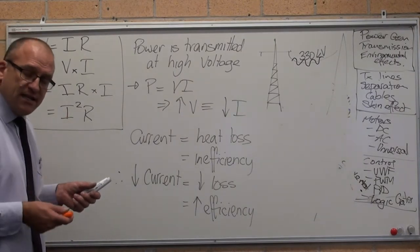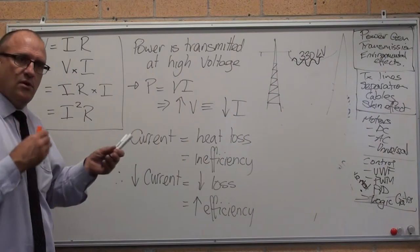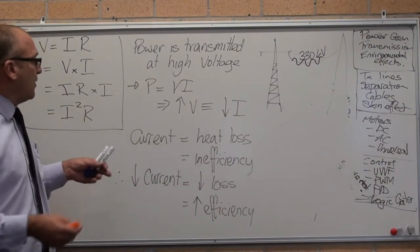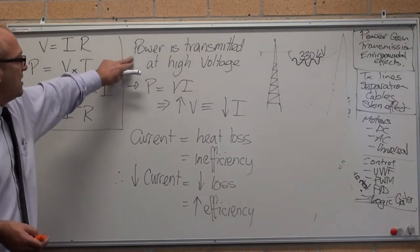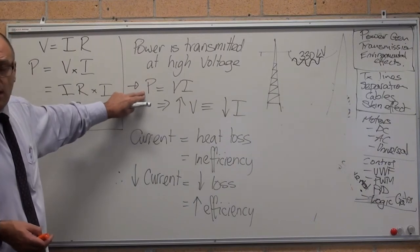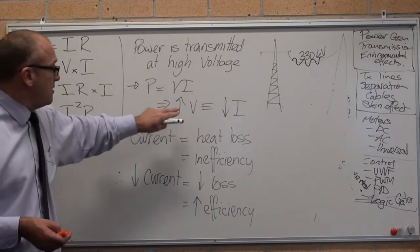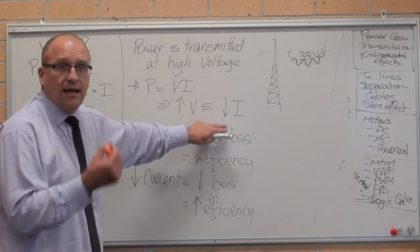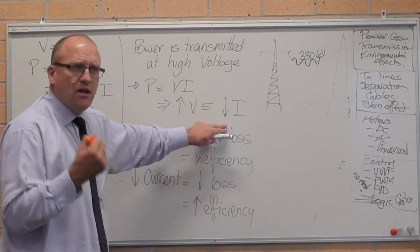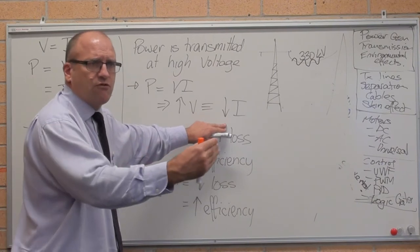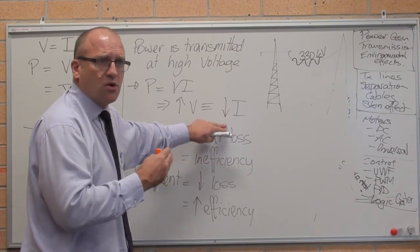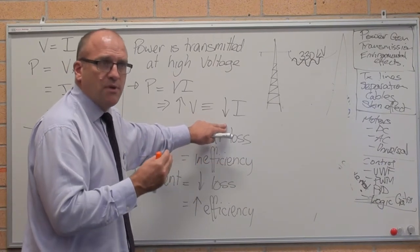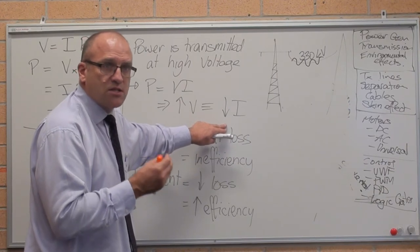The electricity is transmitted down the high voltage power lines. Because if power is voltage times current, high voltage means you transmit the same amount of power at a lot lower current. The current, the flow in the electricity, the electrons moving is what causes the heat. To minimize losses, you need to minimize the flow.